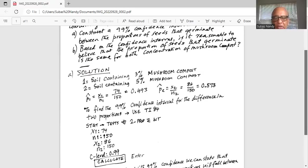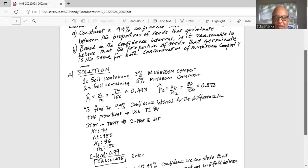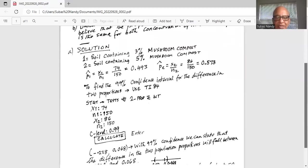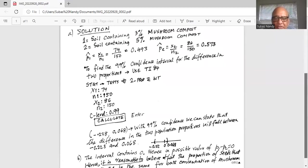We then enter data: x1 is 74, n1 is 150, x2 is 86, n2 is 150, C-Level is 0.99. Then I scroll down to calculate and hit enter and the answer is this.